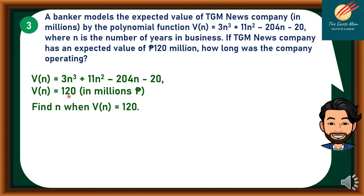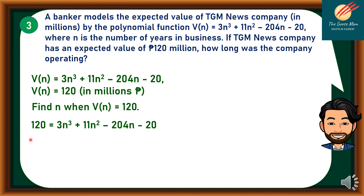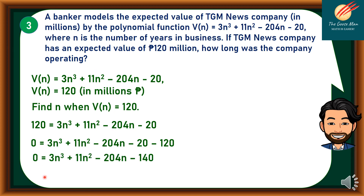We want to find n when b(n) = 120. We substitute 120 into the function: 120 = 3n³ + 11n² − 204n − 20. Subtracting both sides by 120, we get 0 = 3n³ + 11n² − 204n − 20 − 120. Simplifying, we come up with 0 = 3n³ + 11n² − 204n − 140.